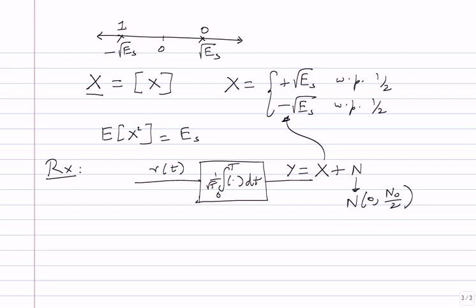This picture is called a constellation — a signal constellation — basically the signal space along with the points representing your signals. On the transmitter side it contains just two points; on the receiver side it will contain many spread-out points. The first interesting computation is how to find f(y|x). We will also derive formally that the probability of y being positive is 1/2, and note that Gaussian random variables need to be at your fingertips for these calculations.